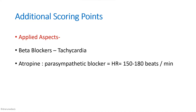As additional applied aspects: since norepinephrine acts through beta-1 receptors, beta blockers will decrease heart rate and are used in the treatment of tachycardia. Another drug is atropine, a parasympathetic blocker; when given, heart rate rises to around 150 to 180 beats per minute. These are two important applied aspects to include in your answer.